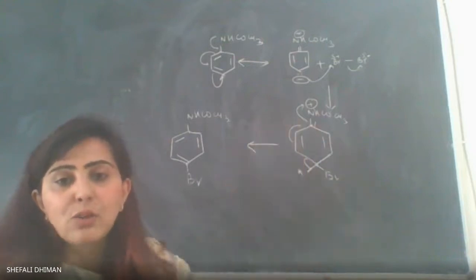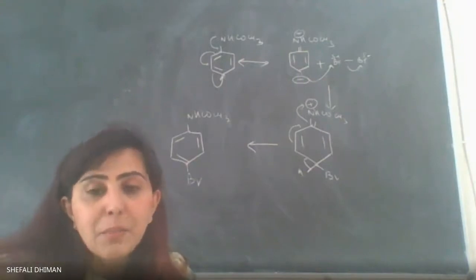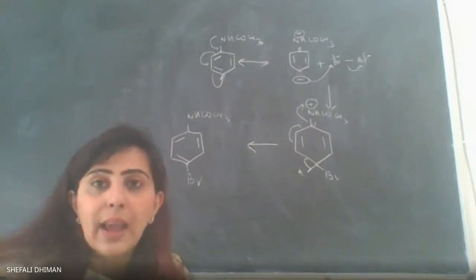After the entire solution turns yellow, you will pour the solution into ice cold water. You would find that there would be a precipitation reaction. A white precipitate of para-bromoacetanilide would separate out.